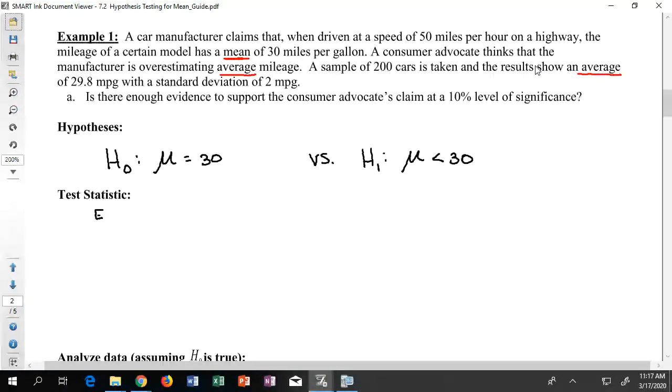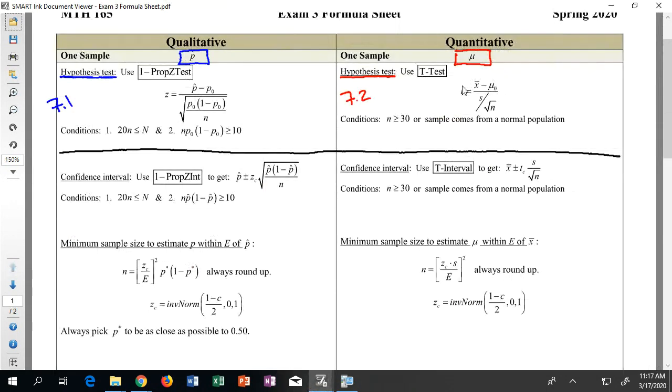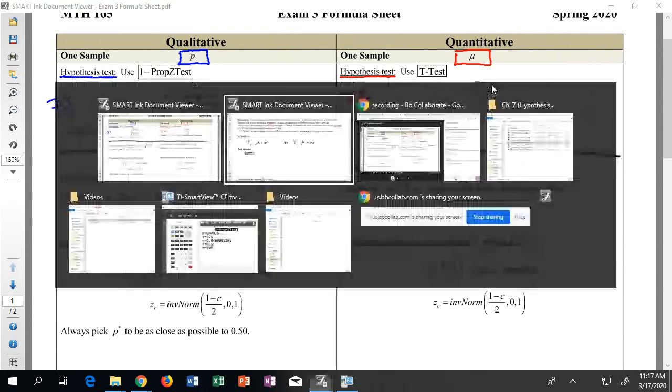I would then jump to my evidence and we have this listed out on the last page, but we can also see on the formula sheet the different pieces of evidence that I'm going to need to grab. I'm going to need an x bar, an s, an n, and a mu zero, which technically I already have because that's the number in the hypotheses. That's my 30.